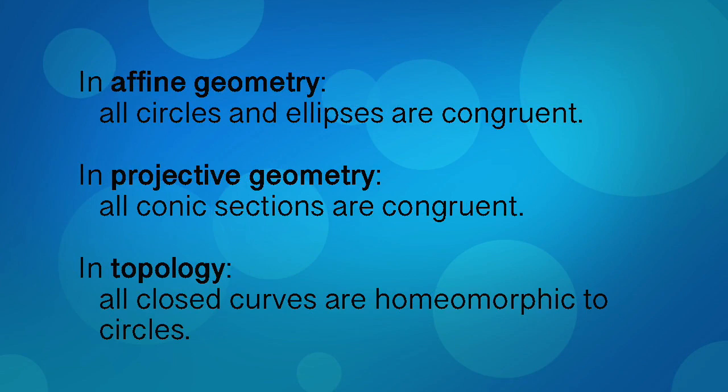In affine geometry, all circles and ellipses become congruent, and in projective geometry, the other conic sections, the parabola and the hyperbola, join them.